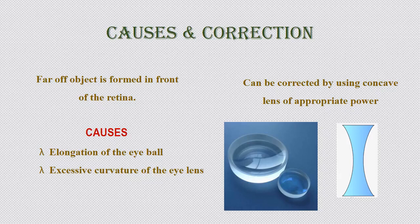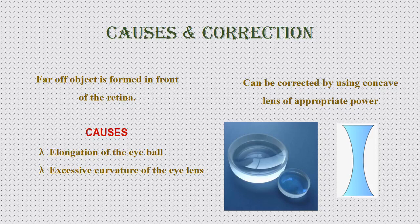Now, how can myopia be corrected? It can be corrected by using a concave lens of appropriate focal length, or appropriate power, because only with appropriate power can you correct it.